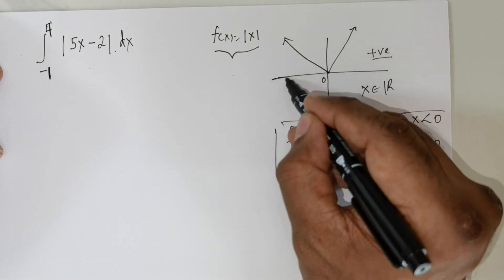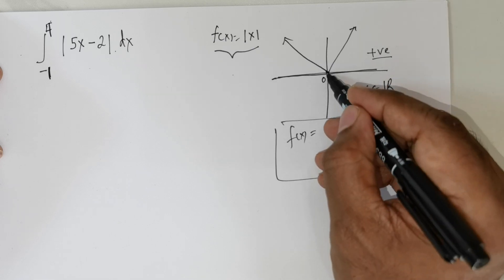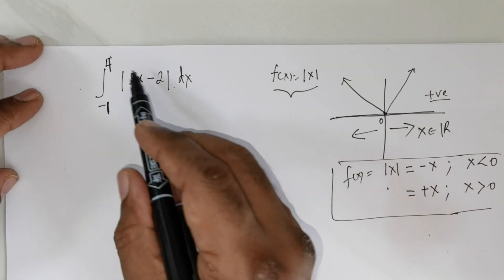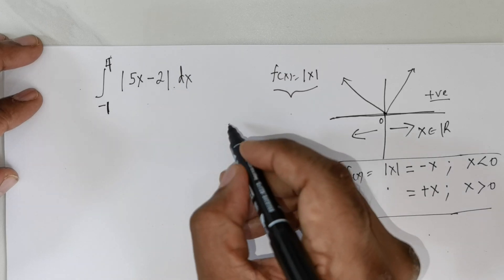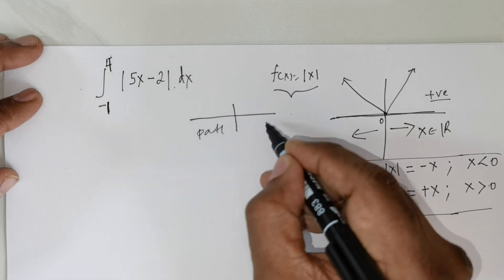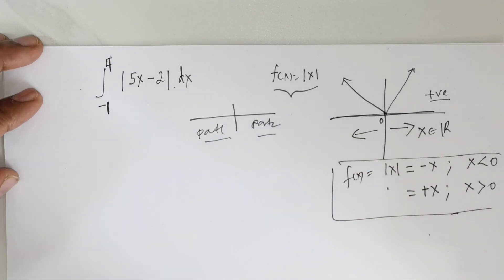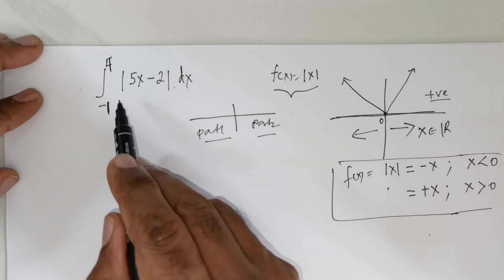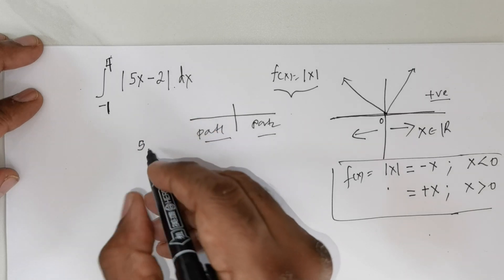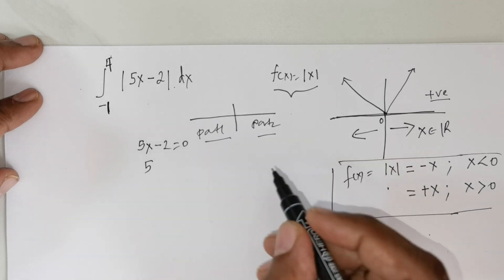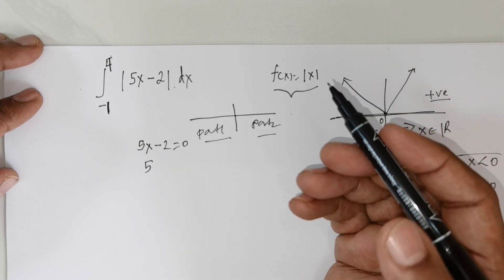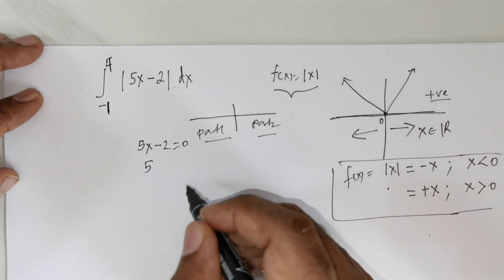This particular number line is divided into two parts: one part to the left of 0 and the other to the right of 0. Whenever you are given a question involving an absolute value function, you have to understand that the values of x will be divided into two parts — part one and part two. We are actually looking to calculate the area, and to find the intersecting point we equate the expression to zero, finding what's called the root of the function.